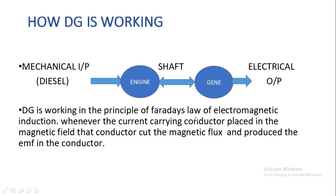This is the general block diagram of the diesel generator's working. We are giving mechanical input — that is diesel — to the diesel engine. The engine starts to rotate, and the engine and generator are both coupled with a single shaft, so when the engine rotates, the generator also rotates.